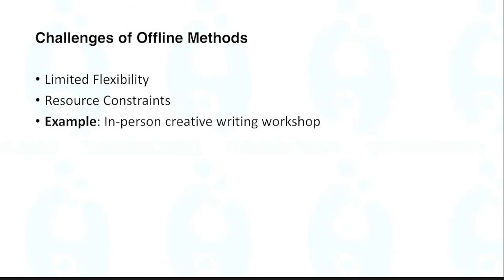Challenges of the offline method: flexibility is very less — there is only a physical classroom and students have to be physically present. If a person is from a remote location, they have to shift to the area where teaching is occurring. Unless physically present, they won't learn anything. This is the problem of limited flexibility. There is also resource constraint — if the classroom is smaller or physical materials like handouts and books are fewer, that limits accessibility.